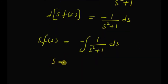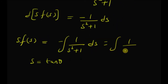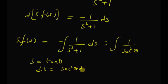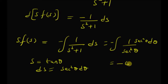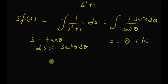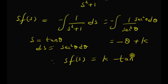By using the variable transformation s equal to tan theta, this integral becomes the integral of 1 by 1 plus tan squared theta, which is secant squared theta, and ds is equal to secant squared theta d theta. So we have secant squared theta d theta, with a minus sign. The secant squared theta cancels with the secant squared theta in the denominator, and we are left with minus theta plus a constant k. Therefore, s times F of s is equal to k minus theta, and theta is equal to tan inverse of s, so we have k minus tan inverse s.